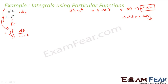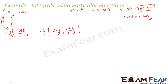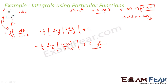Had this been x³ or just x in the numerator it would have been more difficult. But the question is designed such that it directly converts into particular functions. So the integral of dt over (1 − t²) is nothing but (1/2) · log|(1+t)/(1−t)| plus constant. Substituting back, t is x³, so the answer is (1/2) · log|(1+x³)/(1−x³)| plus constant.